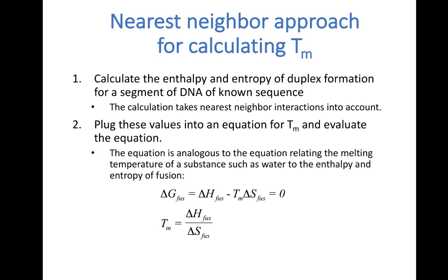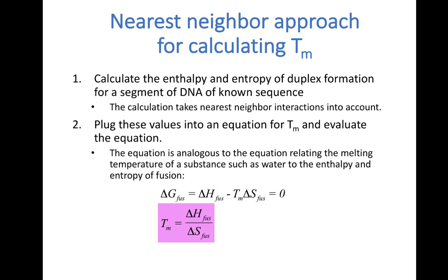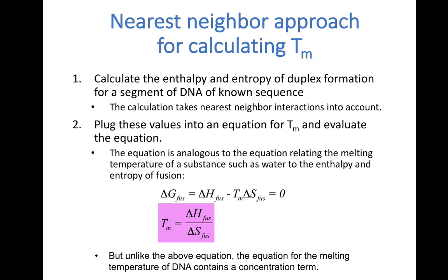Since delta G equals delta H minus T delta S, it follows that delta G for the conversion of ice to water at the melting temperature is given by: delta G fusion equals delta H fusion minus Tm times delta S fusion. Recall that the Tm for a phase transition is the temperature at which the two phases are equally stable. Therefore, we can set the equation equal to zero, and by solving for Tm, we can show that Tm equals delta H fusion divided by delta S fusion. We're going to be deriving an equation for DNA melting temperature which is analogous to this one, except DNA melting temperature depends on the DNA concentration, so we're going to end up with an equation that includes a concentration term.